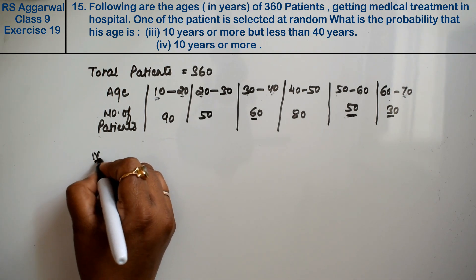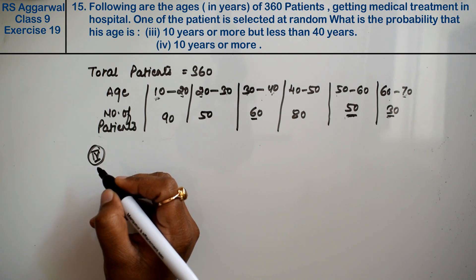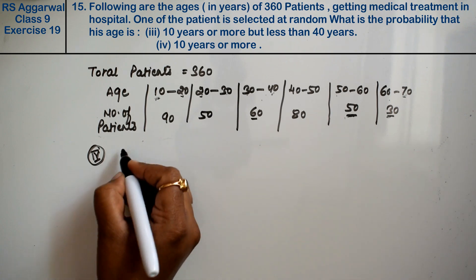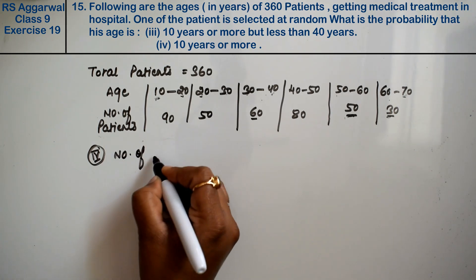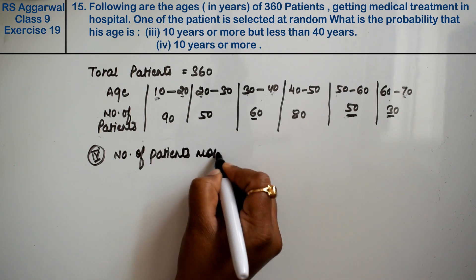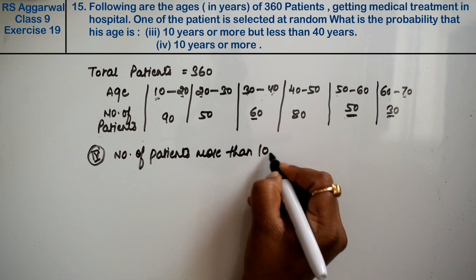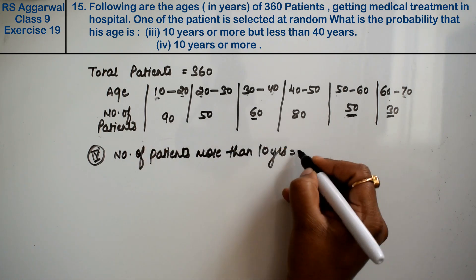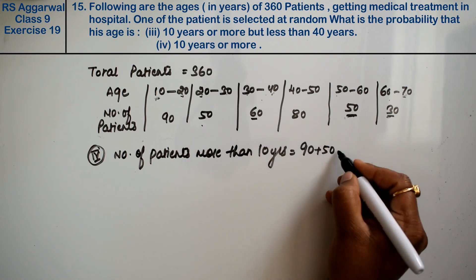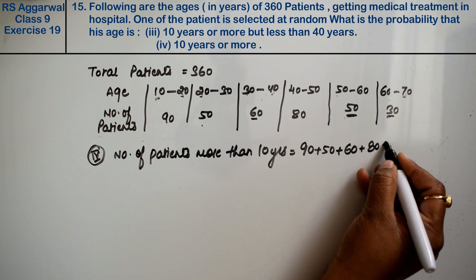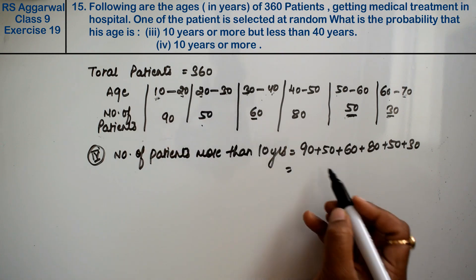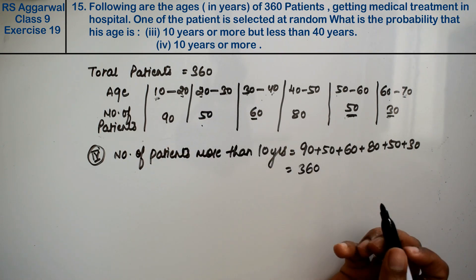Let's do the fourth part. Fourth part asks: what is the probability that age is 10 years or more? Number of patients more than 10 years: 90 plus 50 plus 60 plus 80 plus 50 plus 30 equals 360, which is the total number of patients.